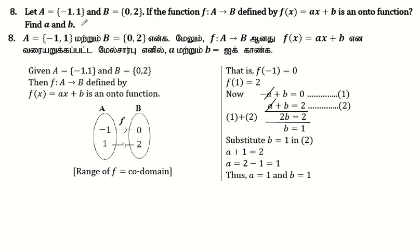A to B. B is an onto function. Sign A and B — A, B will set up. If A is a map of this function, we have an onto function.